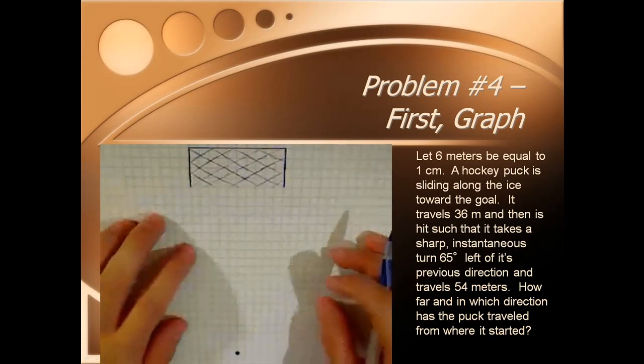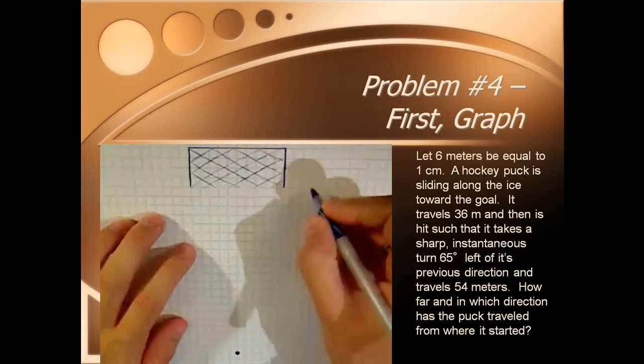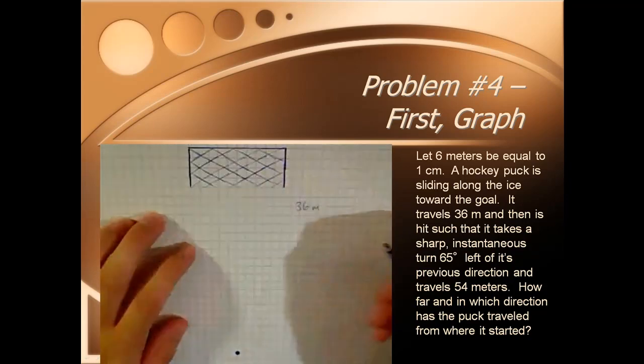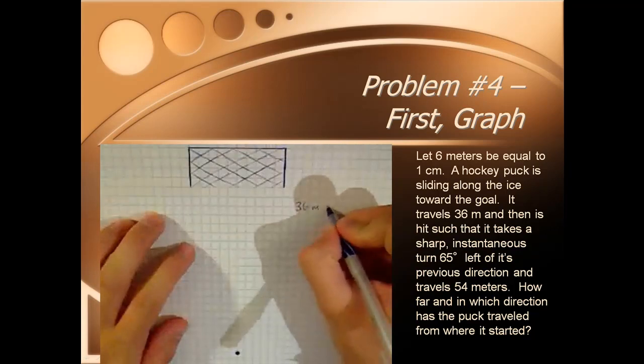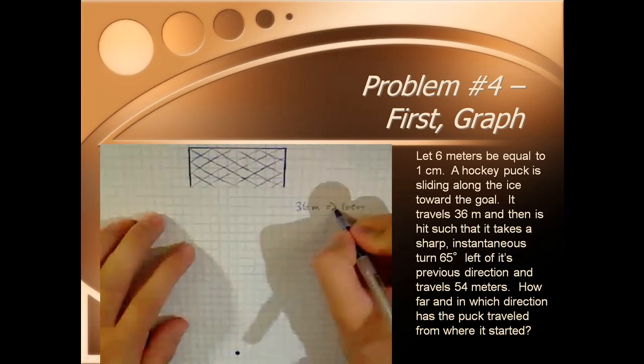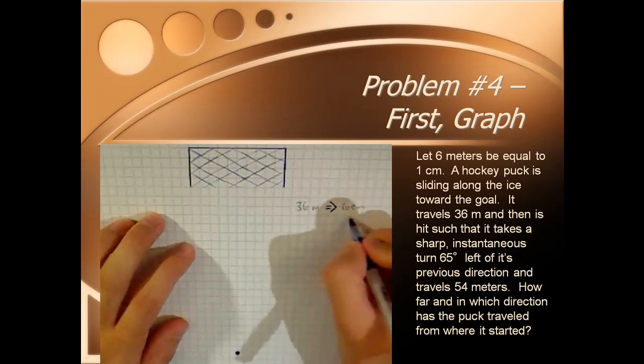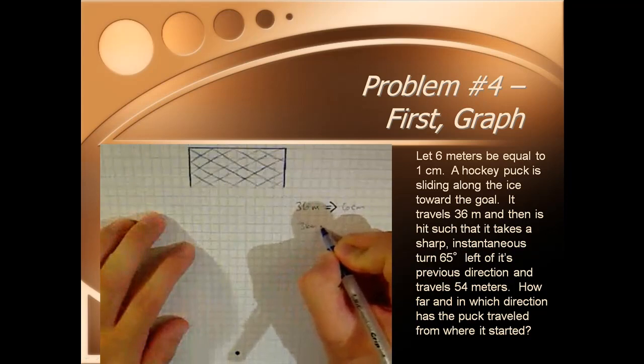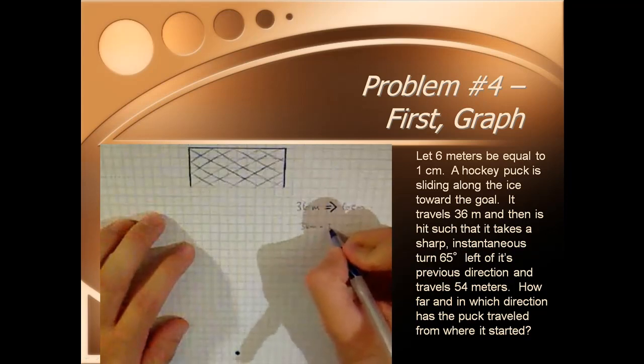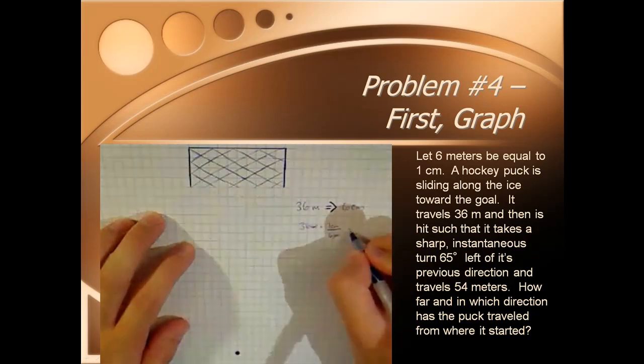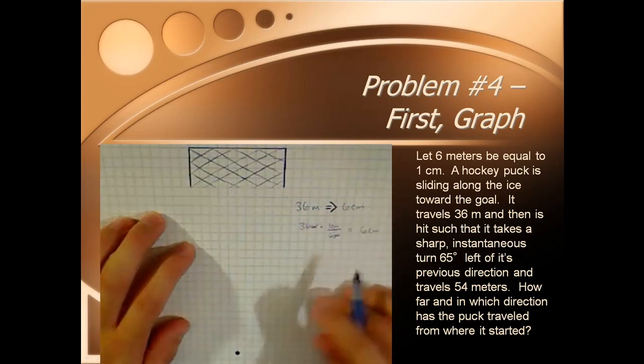The first thing that we need to do is set the problem up. First let's write down what we know. We know that we have 36 meters toward the goal. 36 meters is going to turn into 6 centimeters. Those of you in my class know that this means turns into. But remember, 36 meters, if we multiply the conversion factor, 1 centimeter over 6 meters, the meters cancel, 36 divided by 6 gives us 6 centimeters. We'll do that part real quick.